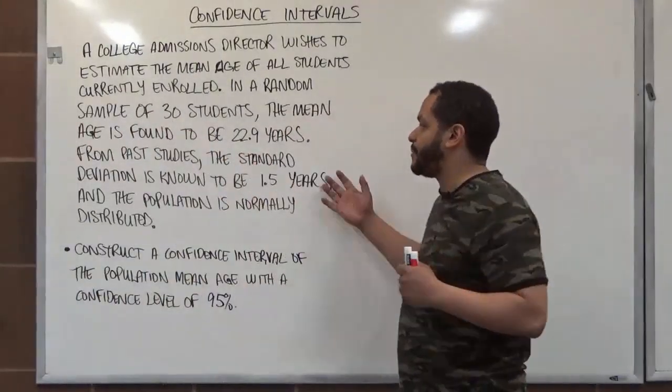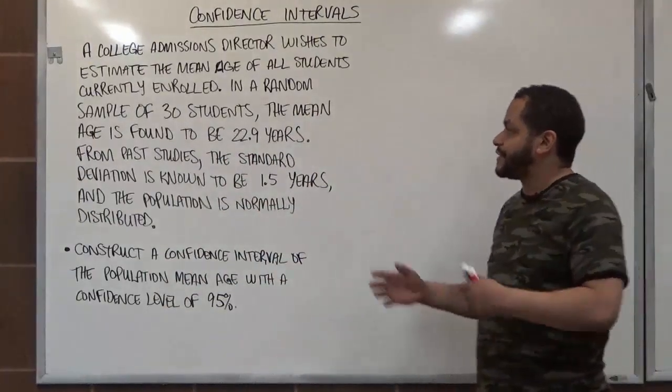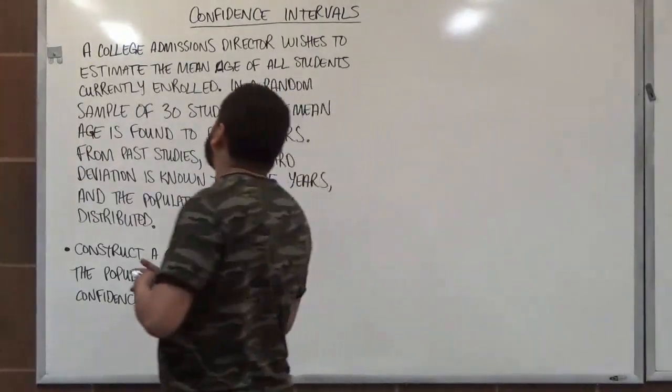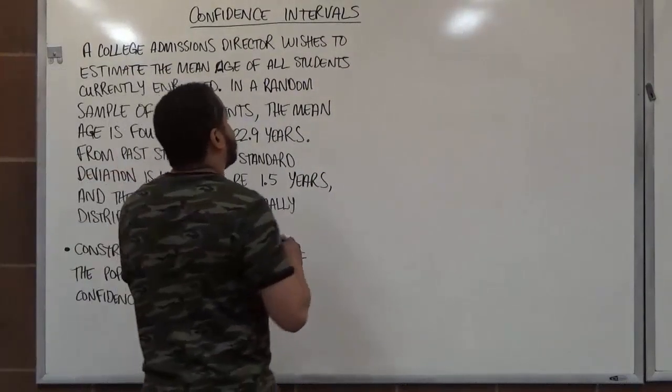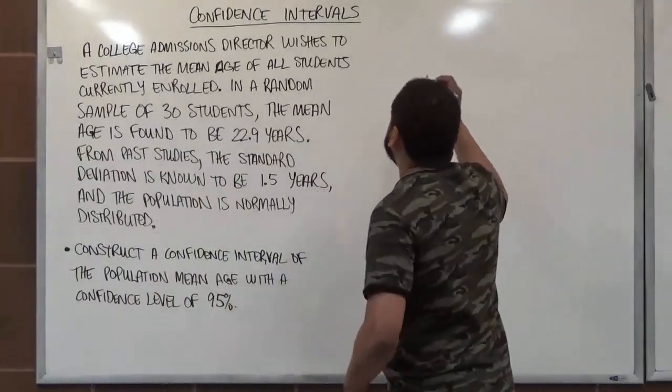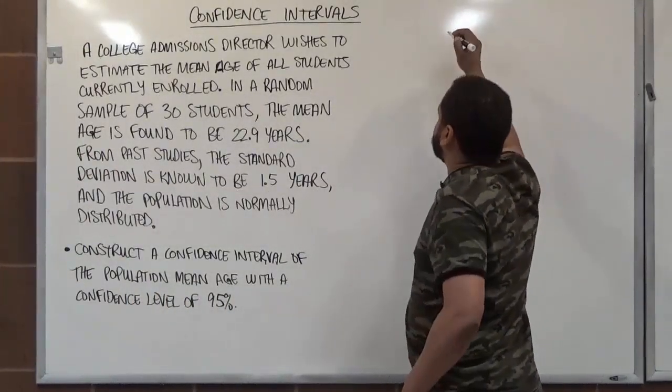A few things we know from the problem settings already. For instance, we're doing a confidence interval for the mean age. And besides that, we have to identify a couple of other things. But let's start off with the confidence interval for the mean age.